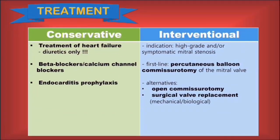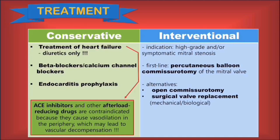For the final section of this lecture, we will talk about treatment options. Depending on the severity of the stenosis, we can choose a conservative or an interventional treatment. The conservative option includes medications to help the heart deal with the valvular defect. We can prescribe beta blockers or calcium channel blockers to ensure a slower heart rate and give the left ventricle a chance to fill adequately with blood. We should use antibiotics for endocarditis prophylaxis, anticoagulants to reduce the risk of stroke in patients with AFib, and diuretics in case of heart failure. Very importantly, in the case of heart failure, we should only use diuretics — medications like ACE inhibitors or any other afterload-reducing drugs will cause peripheral vasodilation, and the heart will not be able to adapt its output to the new conditions because of the mitral stenosis, leading to vascular decompensation.